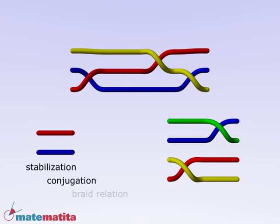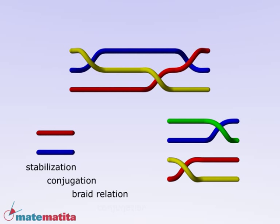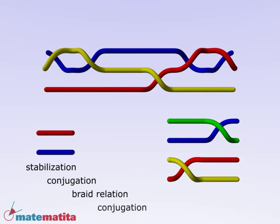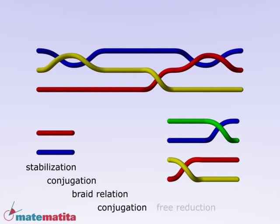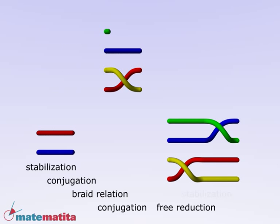We already know that these two braids give the same knot. Now we can prove this without passing through the realm of knots. We have to find a sequence of conjugations and stabilizations that transforms one braid into the other.